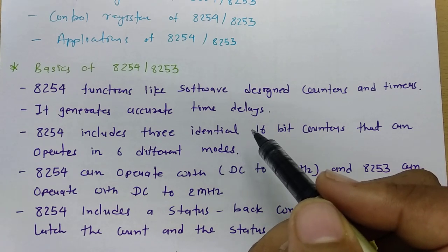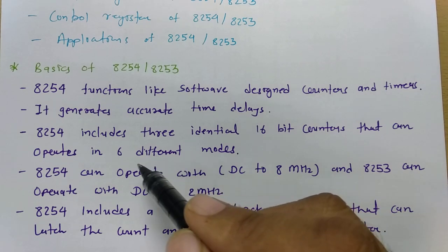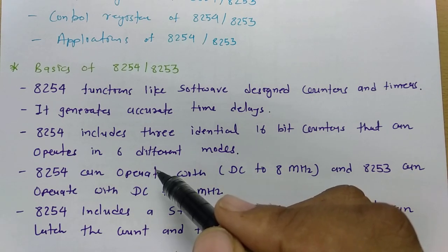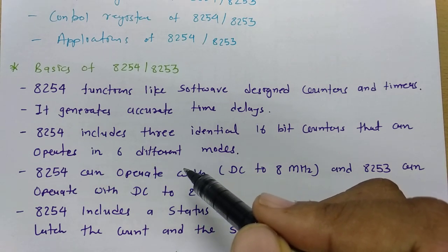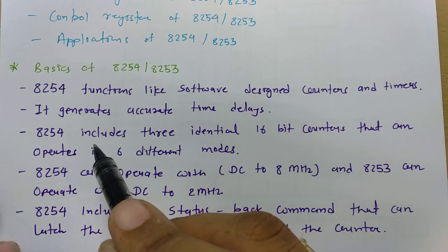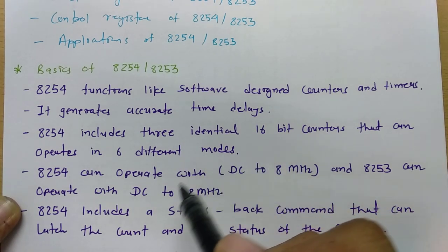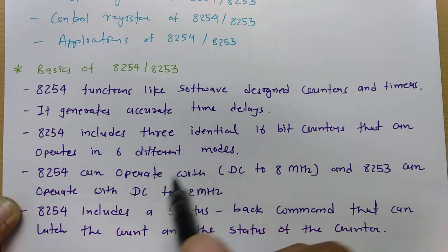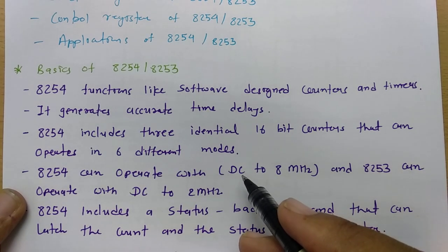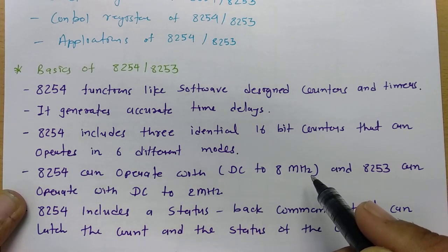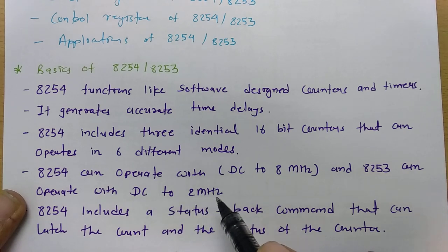I will explain all 3 timers and counters in 8254, how many modes are there, and how to select those modes — all covered in the control register explanation. The 8254 can operate from DC to 8 MHz frequency, while 8253 operates from DC to 2 MHz.